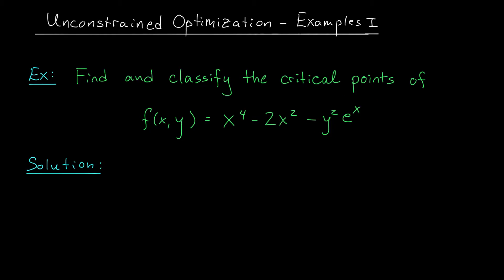Our first step is to find these critical points. How do we do that again? The critical points come from the partial derivatives of my function. So I need to compute fx and fy. The partial derivative with respect to x at xy is 4x cubed. Derivative of this term is minus 4x. And the derivative of this term is minus y squared e to the x.